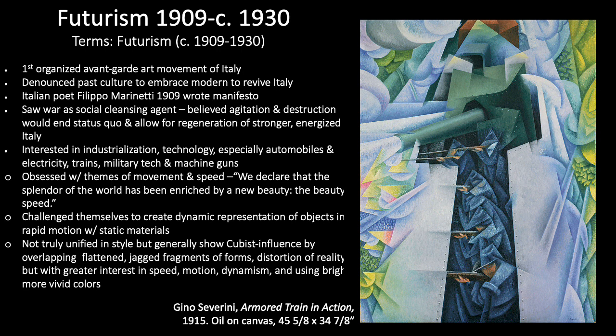The image by Gino Severini, Armored Train in Action from about 1915, was probably based on a photograph of a Belgian armored train going over a bridge. We observe the scene from a radically tilted perspective, essentially looking from above. The influence of Cubism is clear with jagged, fragmented, and splintered forms and overlapping surfaces, but the vivid colors and dynamism are quite different, ultimately communicating a chaotic scene of smoke, violence, loud cannon and gun blasts, and the force of the speeding train racing through rich green plant life.